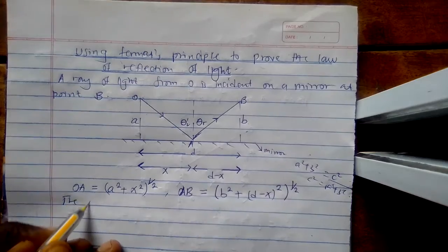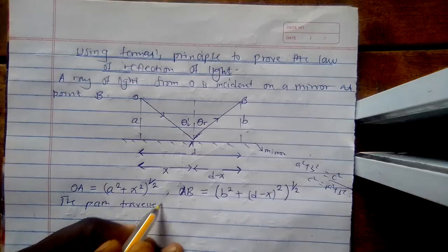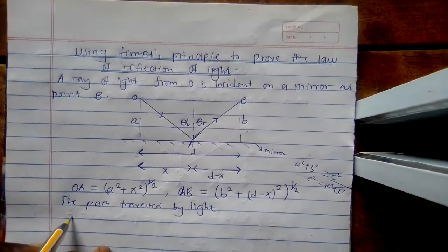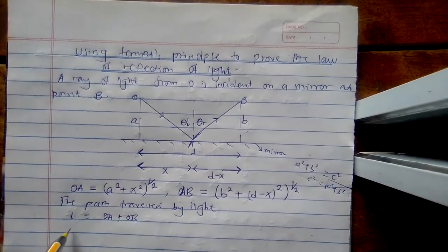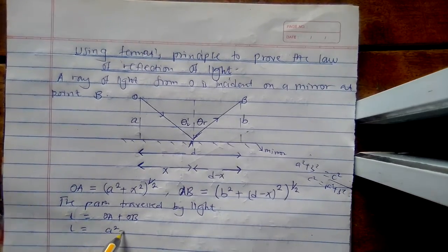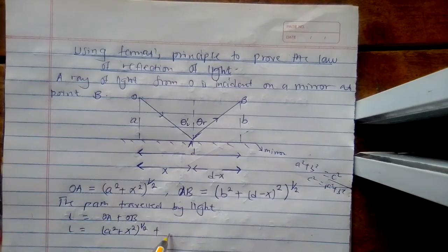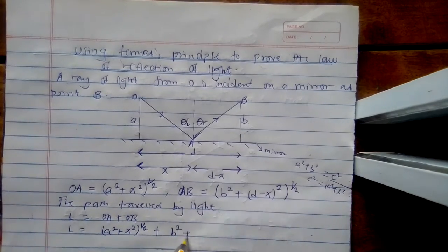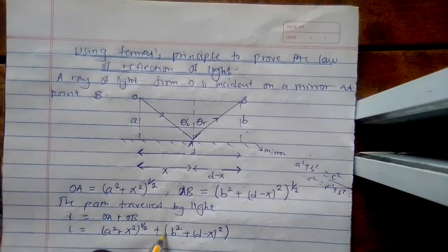So now, the path traveled by light, L, is equal to OA plus OB. Applying that, L equals (a² + x²)^(1/2) plus (b² + (D minus x)²)^(1/2).